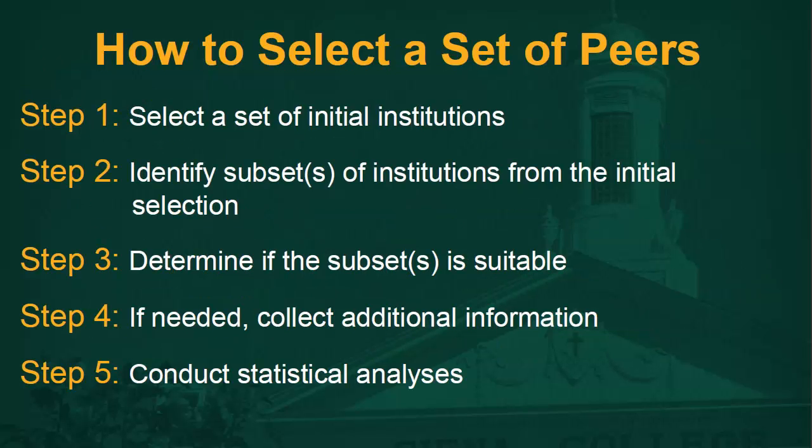Although it depends on the purpose of the peer set and the reference institution, there are typically five steps to ensure a reasonable set of peers. They are: selecting an initial set of institutions to start your analysis, then identifying subsets of institutions from your initial selection with standardized data. The third step is to determine if the subsets you created are suitable for the analysis you are conducting. Next, if needed, collect additional information from your institution to make a more suitable set of peers, then finally you can conduct your analysis.